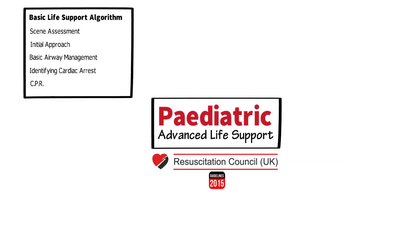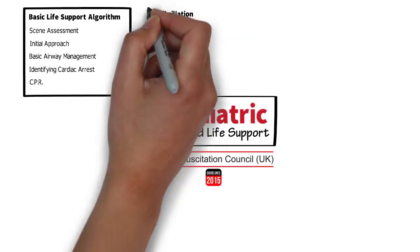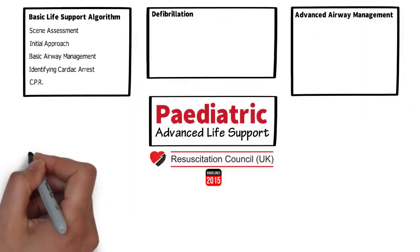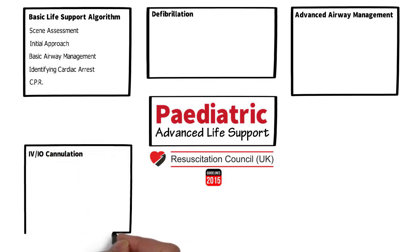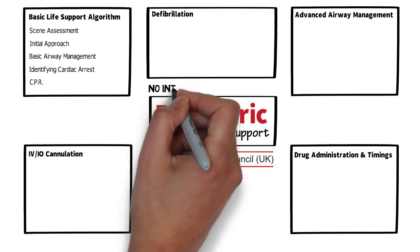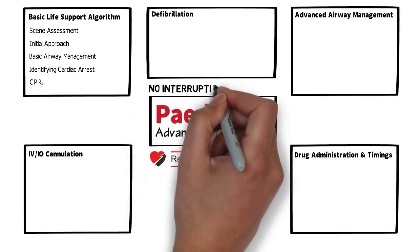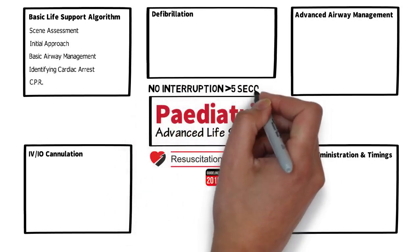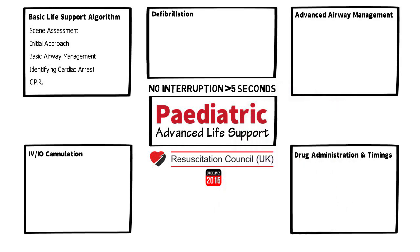The main categories for ALS are defibrillation, advanced airway management, IV or IO cannulation, and drug administration and timings. Many of the skills we're going to discuss and demonstrate will necessitate some interruption of CPR, and so it's important to highlight a key principle: according to Resuscitation Council guidelines, at any point during the resuscitation CPR should be interrupted for no longer than five seconds.